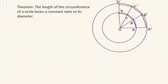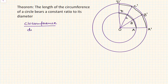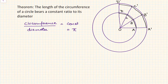Welcome friends to another session of trigonometry. In this video we are going to discuss a theorem which says the length of the circumference of a circle bears a constant ratio to its diameter. All of us know that circumference divided by diameter of a circle is a very famous constant called pi. We will not be evaluating the value of pi, but we will be proving that for any circle the ratio of circumference to its diameter is always a constant.